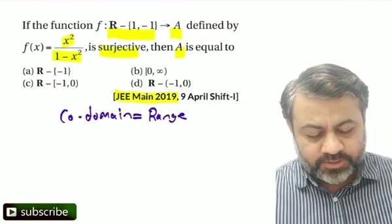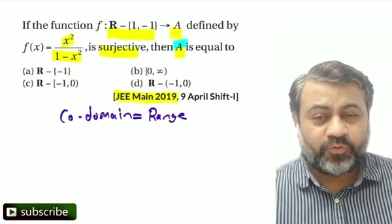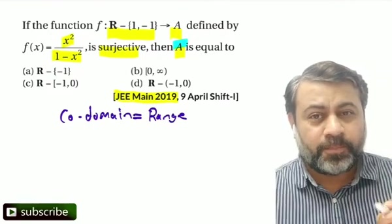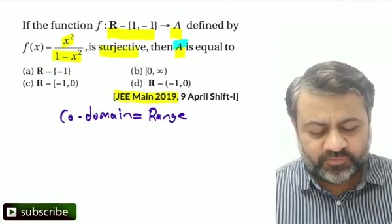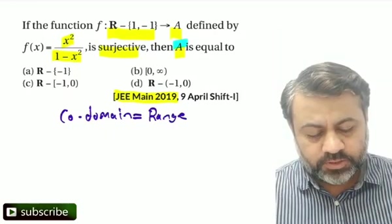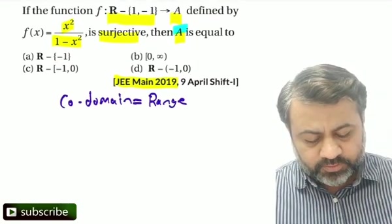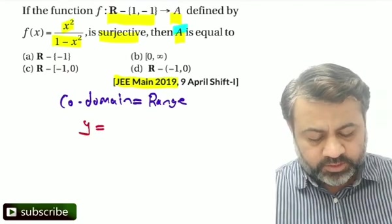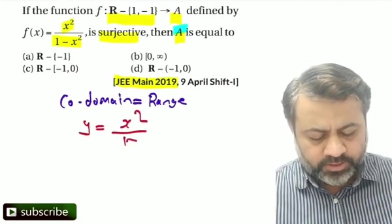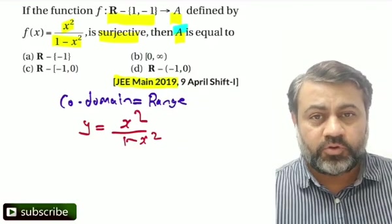How to find the range? What is the basic standard procedure to find the value of range? What we do here is recall that your question which is here: y = x²/(1-x²). This thing y = all x, we convert to x = all y.